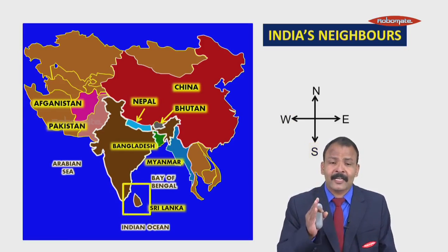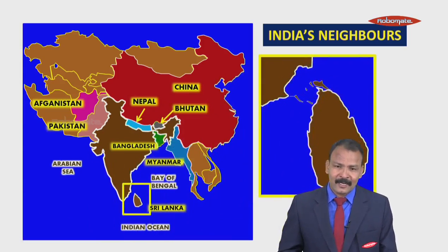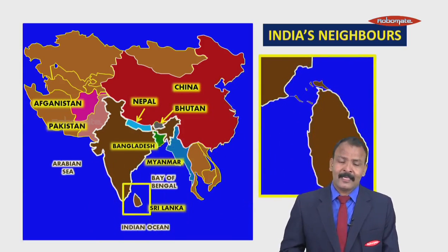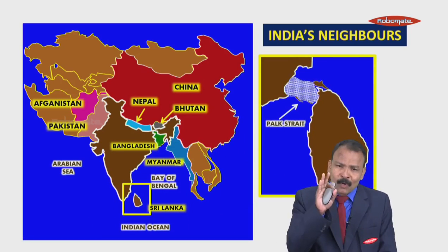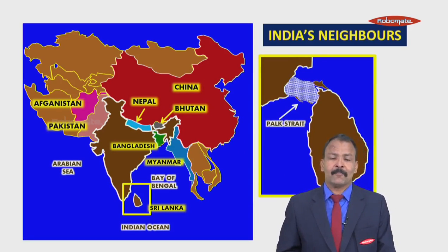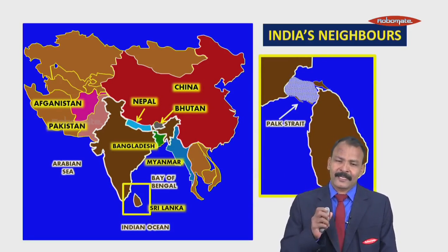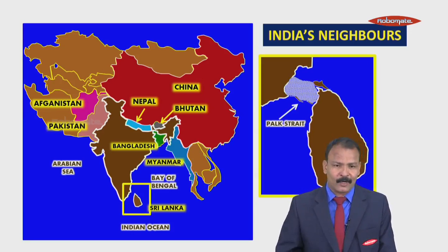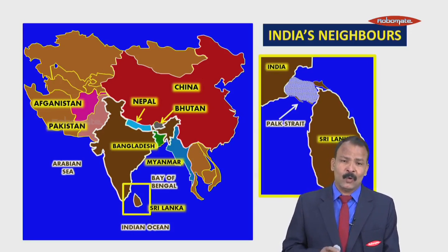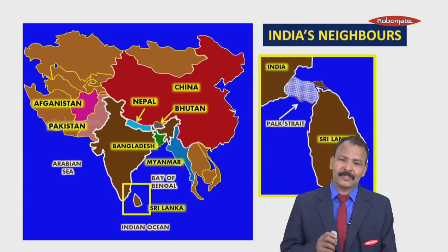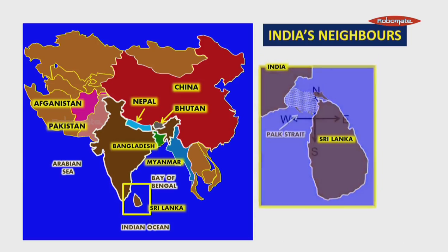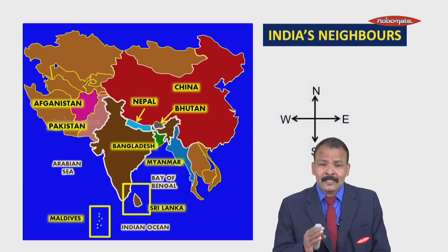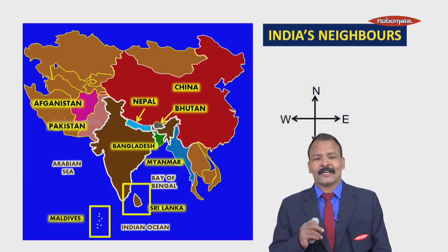Sri Lanka is separated from India by a small water body known as Palk Strait. Palk Strait is a small strip of water that connects two lands — Sri Lanka and India — or we can say it joins two seas. These are the neighbors of our country.